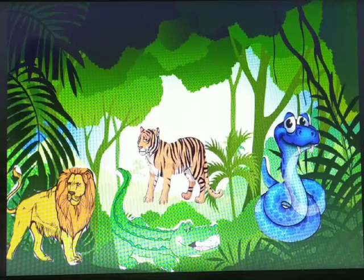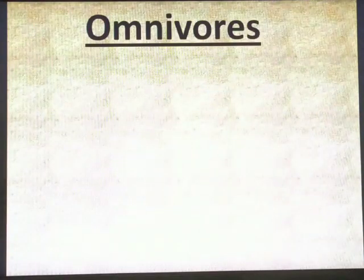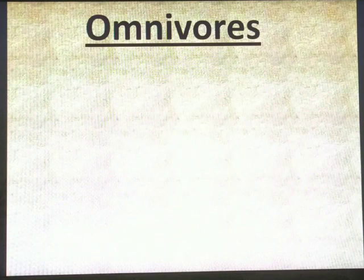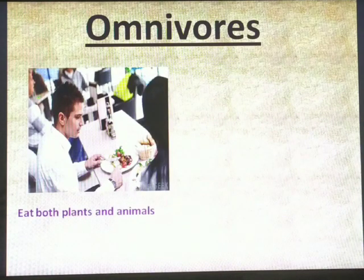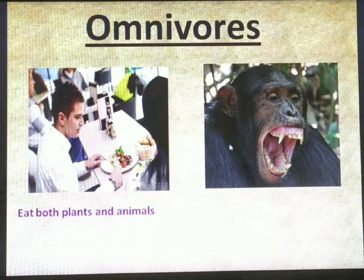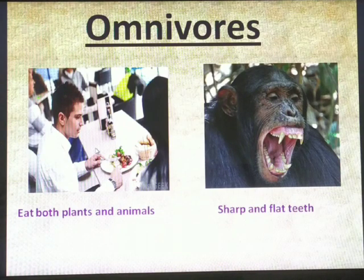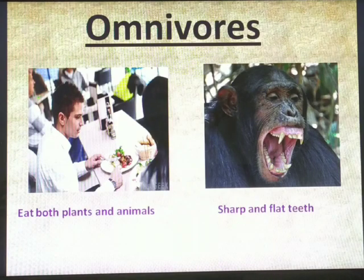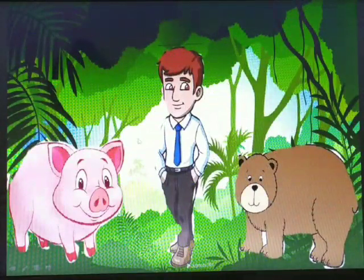Common examples of carnivores are lion, tiger, alligator, snake, and many other animals. The next category, the third one, is omnivores. Omnivores are animals which feed upon both plants as well as animals. They have sharp as well as flat teeth for eating meat and plants. For example, human beings feed upon plants as well as the flesh of animals, so we are omnivores.